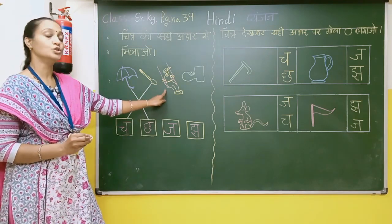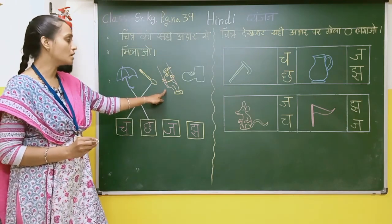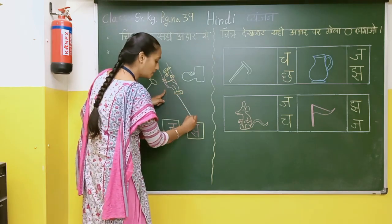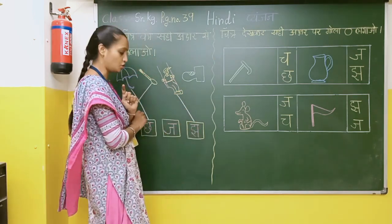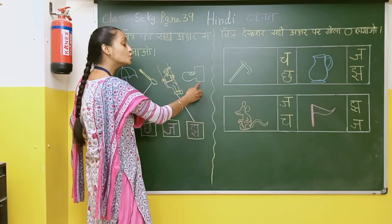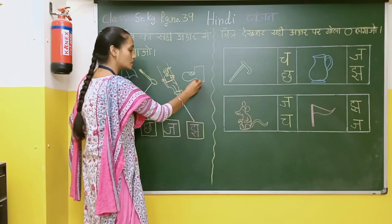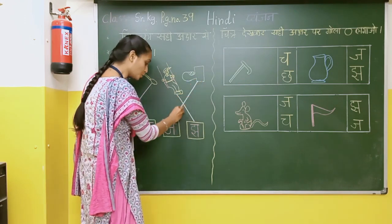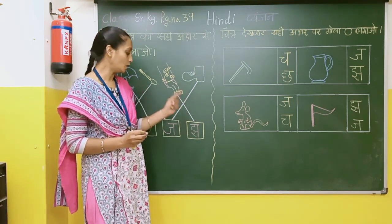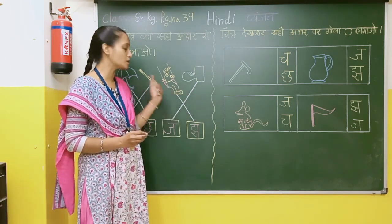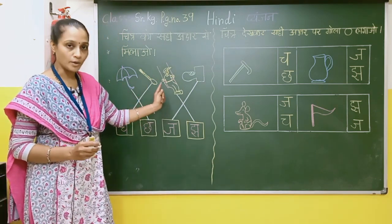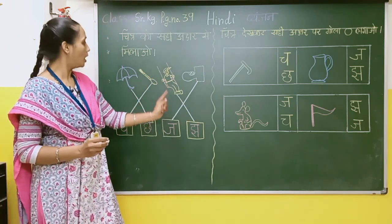Jh se jhula. So we will get this chitra — akshar se.